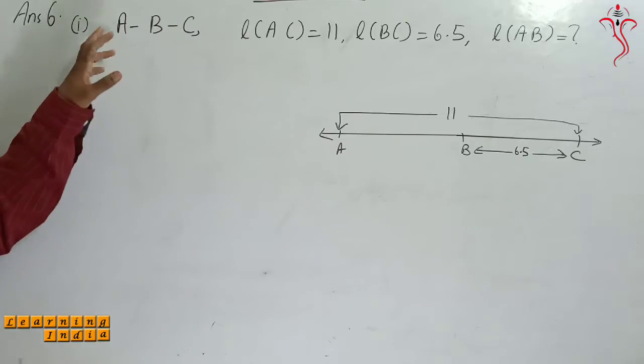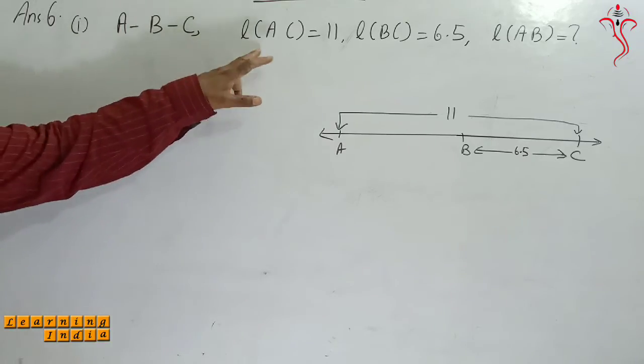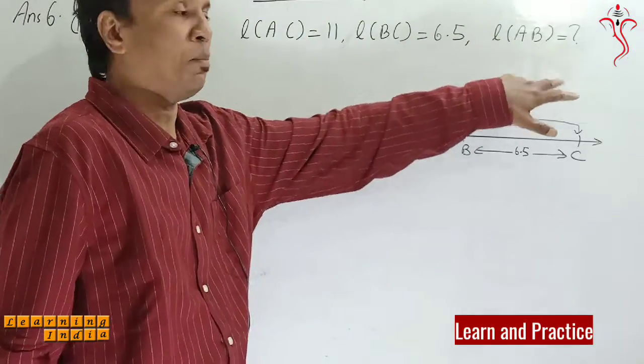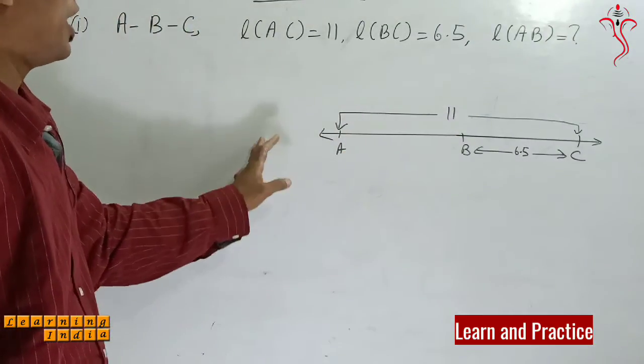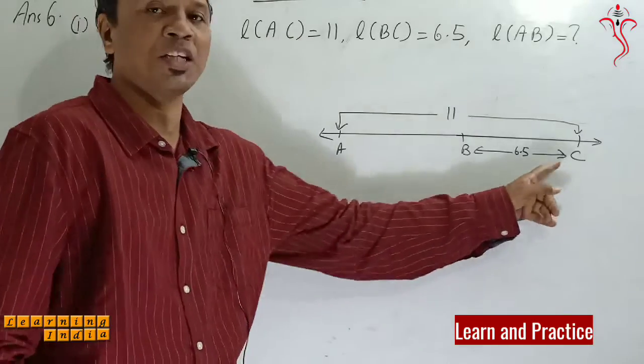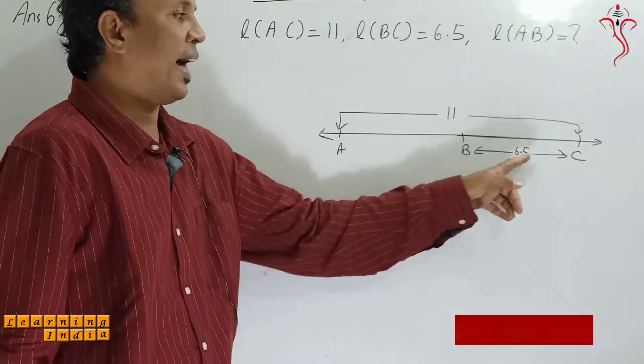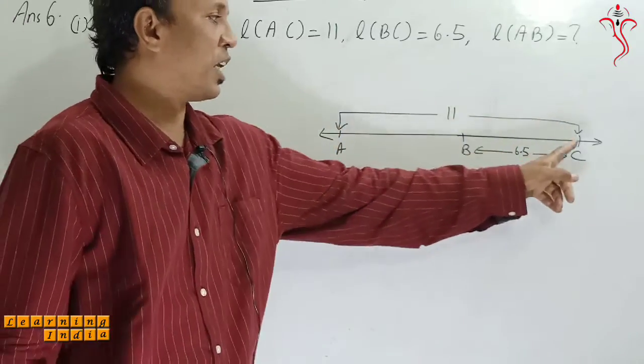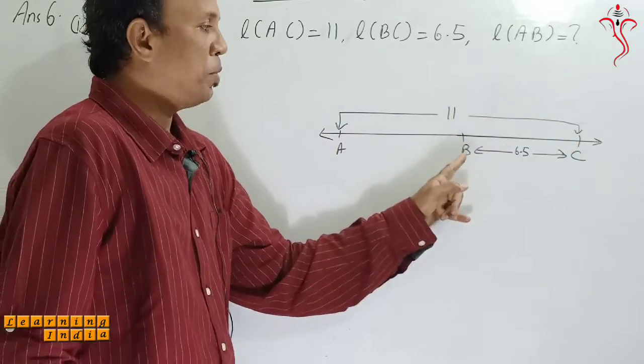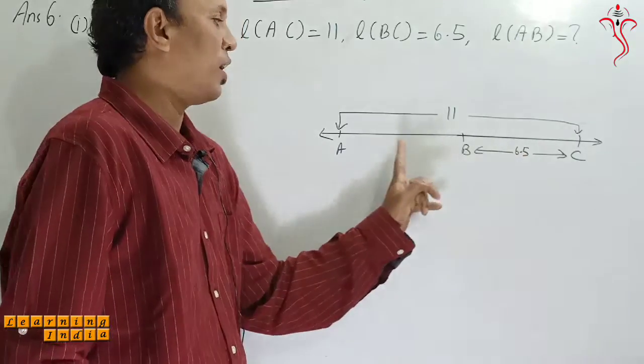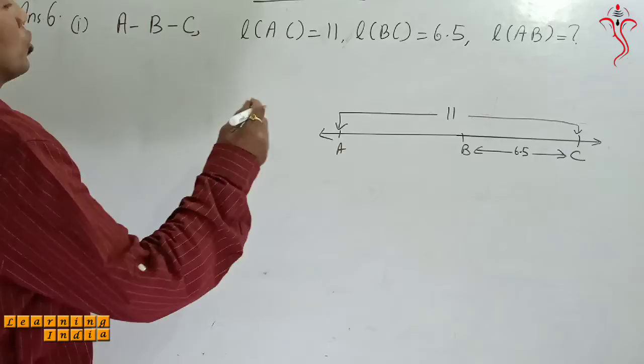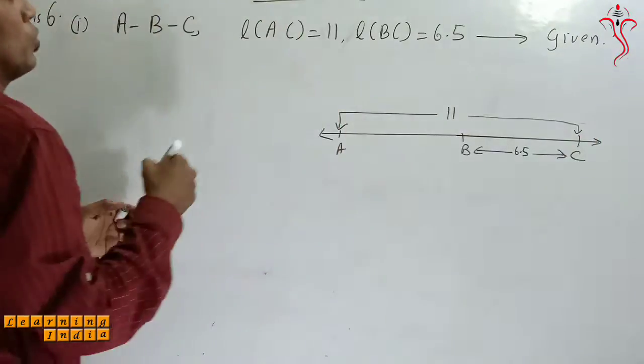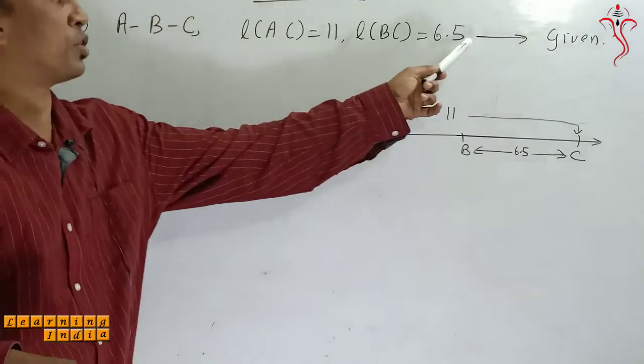In question number 6, sub-question 1, they have given you points A-B-C. Length AC is equal to 11, length BC is equal to 6.5. You have to find AB. We will do the diagram also. A-B-C will be straight, length of AC to the measurement is 11, BC to the measurement is 6.5. You have to find out the value of AB. A is given, BC is equal to 6.5.